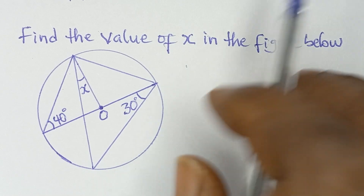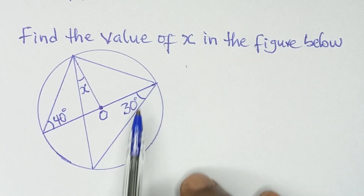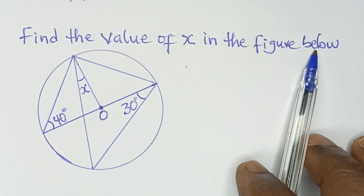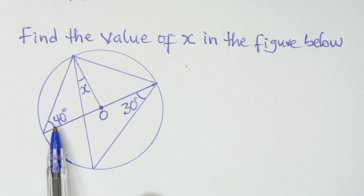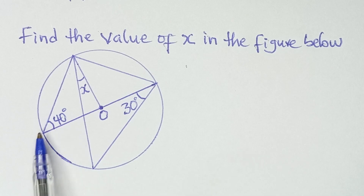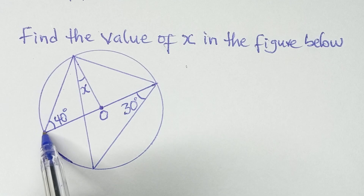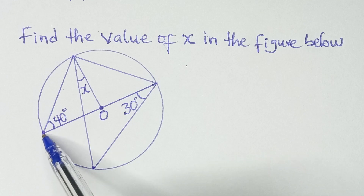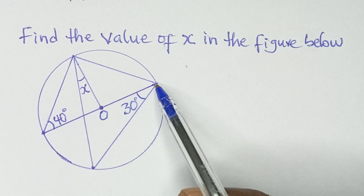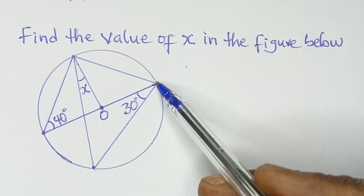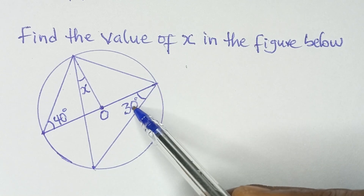Hello, good day and welcome to my channel. The question here says: find the value of x in the figure below. Looking at this figure, we have a point, and from that point two lines move — one line moves from this point to the circumference, and another line moves from this point to the circumference, forming an angle of 30 degrees.